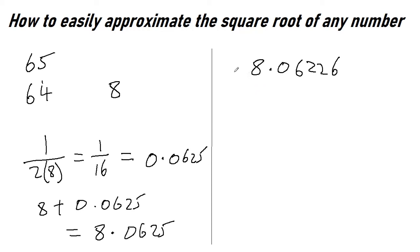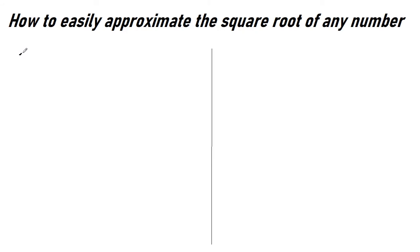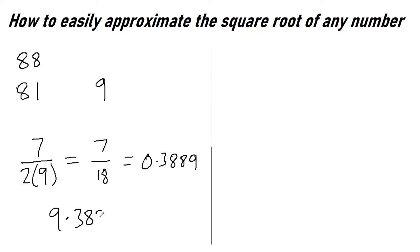Let's try one that is a bit further apart. Square root of 88. We know that the square root of 81 is 9. So here we have a difference of 7. And we're going to divide that by twice this number, the square root that we know. So it equals 7 over 18, which equals 0.3889. So our approximate square root is 9.3889.